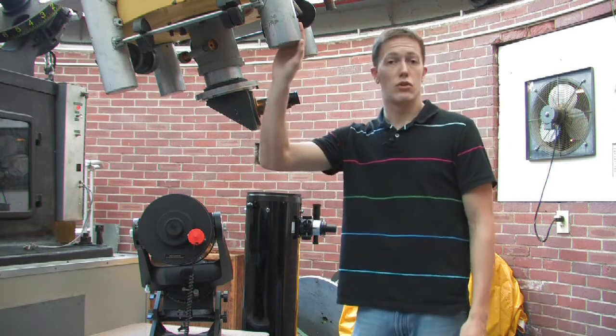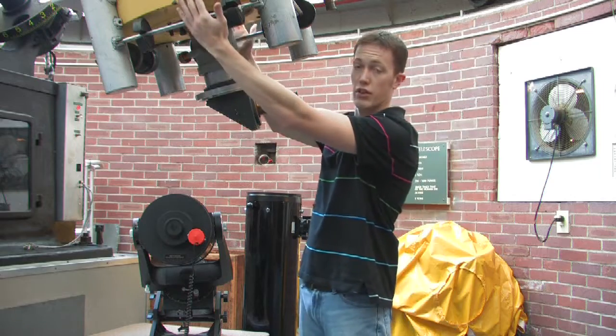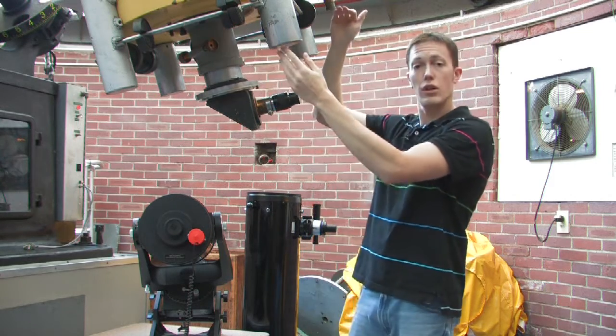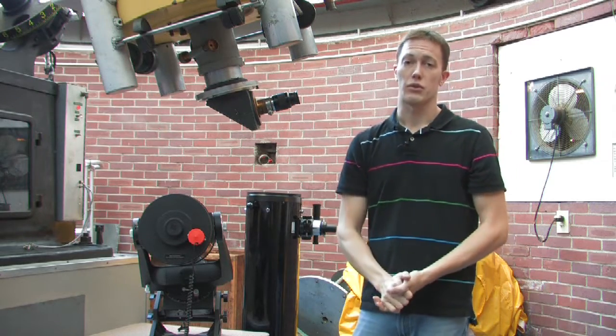This telescope also makes use of that same principle. But instead of moving the big mirror that sits at the back of the cell, it actually moves the second mirror that's up towards the front of the telescope. And again, it makes use of a motorized focuser.